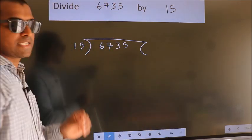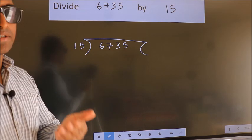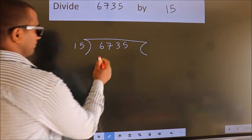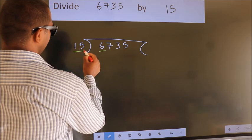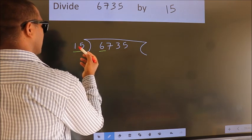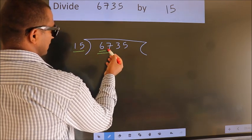This is your step 1. Next, here we have 6, here 15. 6 is smaller than 15, so we should take two numbers: 67.